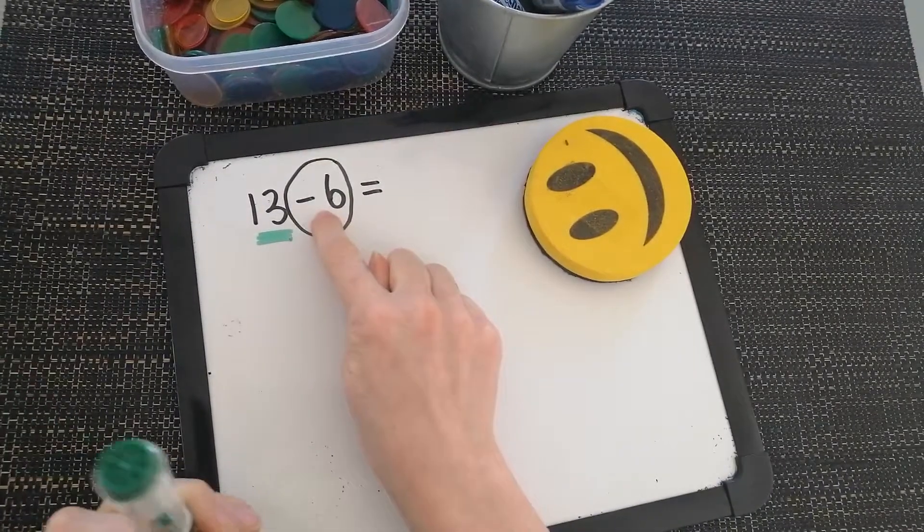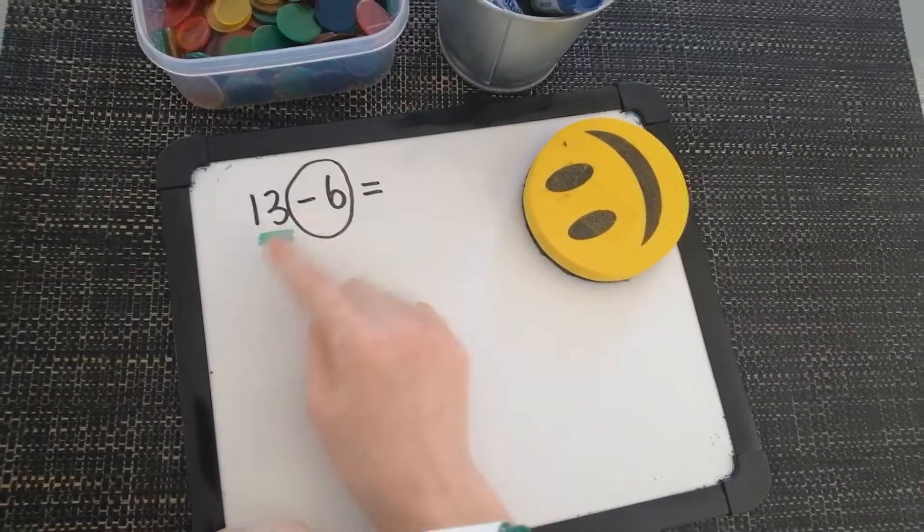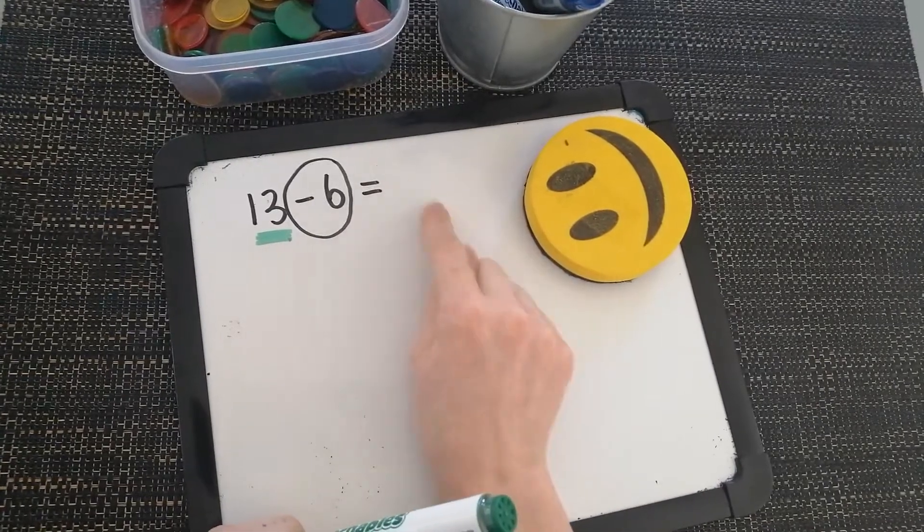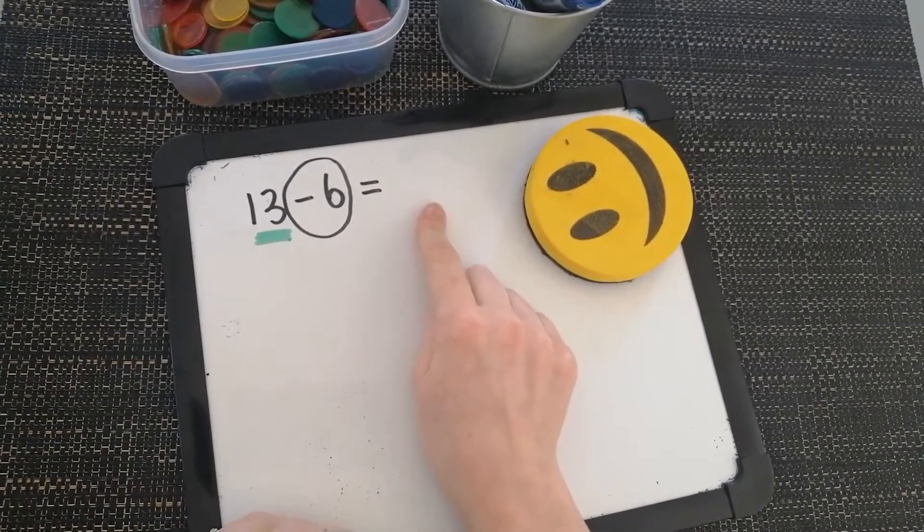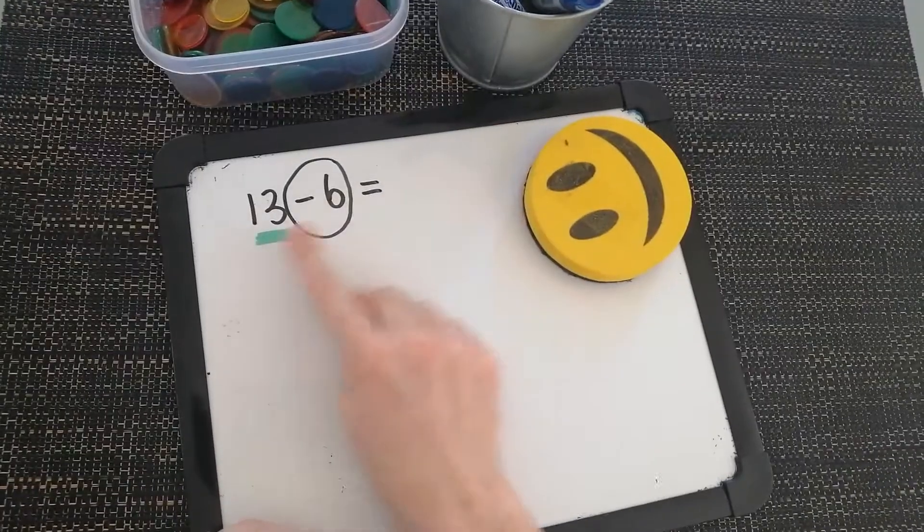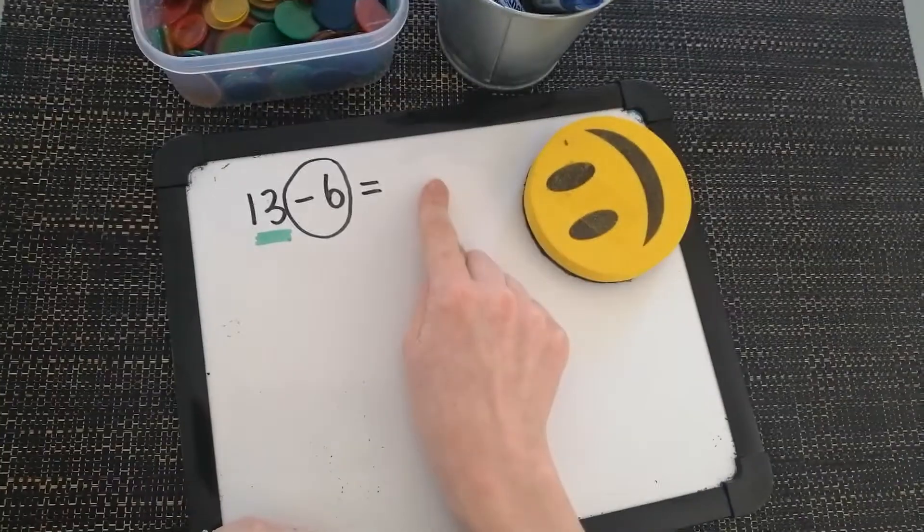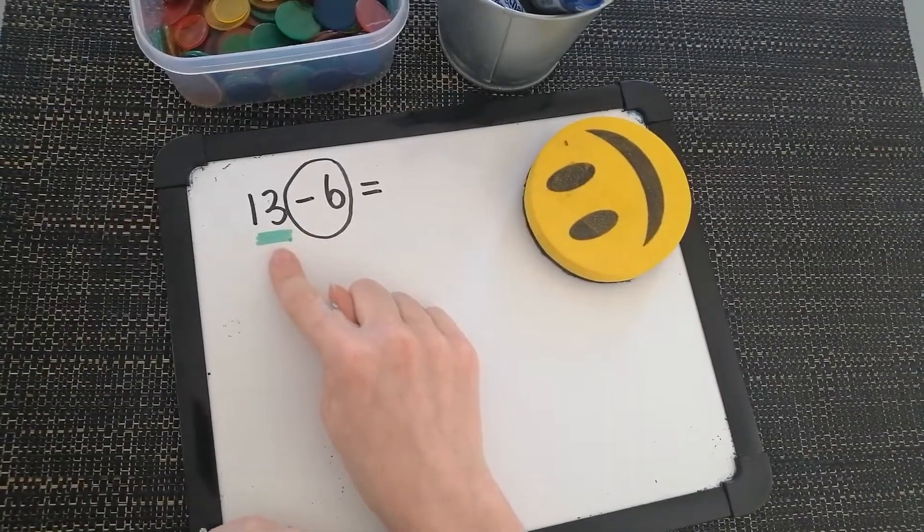I take away the smaller number from the bigger number and my answer after my equal sign will always be smaller than the number I start out with because I am taking things away from that number.